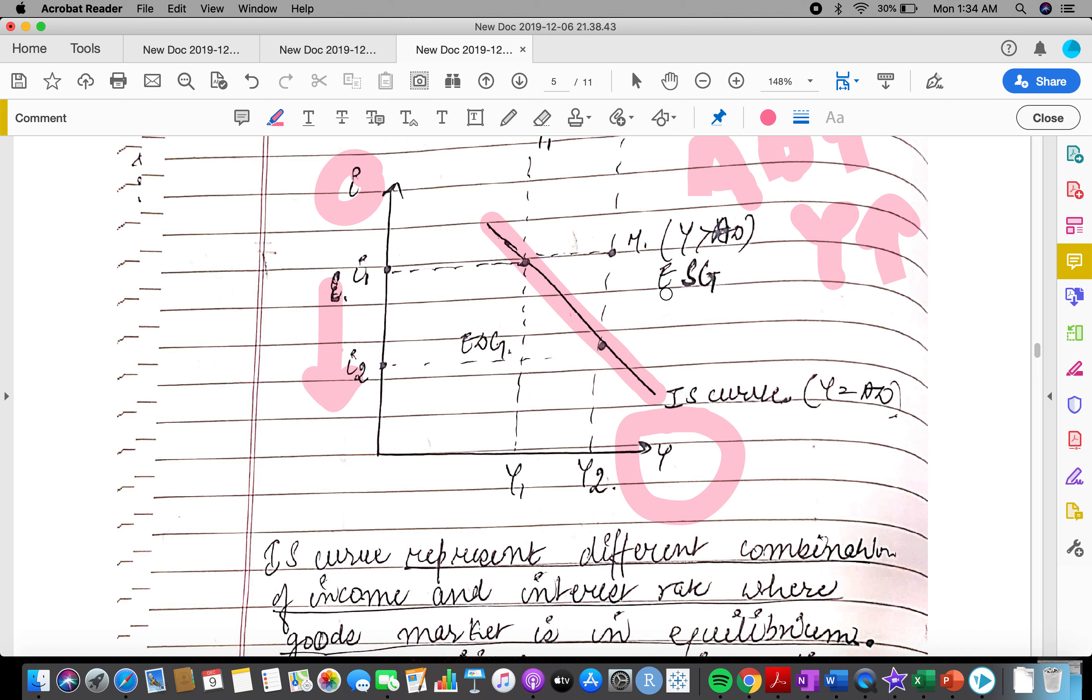To the right of it, when output is more than AD, stock has to be reduced since there is excess supply of goods, so as to reach an equilibrium situation. To the left of IS curve, there is excess demand of goods.